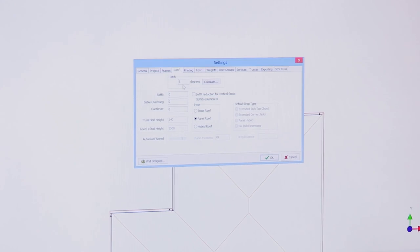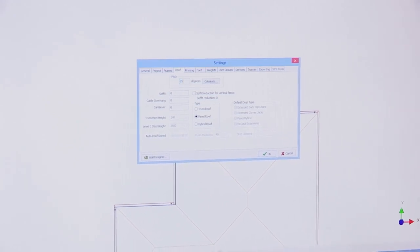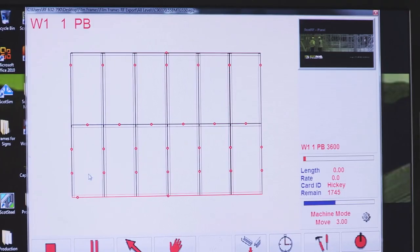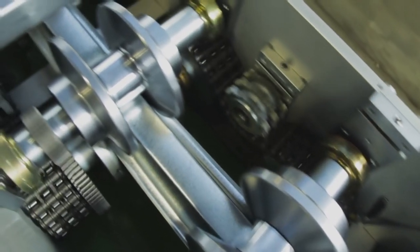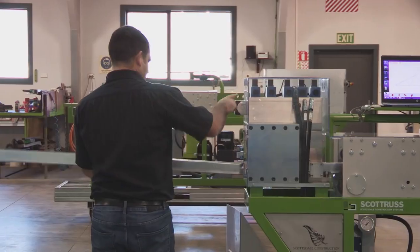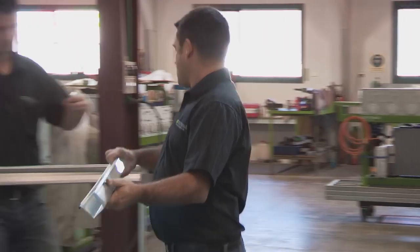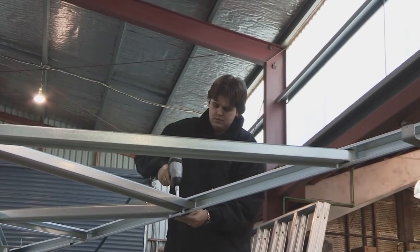Structures are designed and engineered in the Scottsdale software which is then exported to the roll former. The roll former then produces the design. As members are extruded from the roll former, the fabrication team assembles the framing.